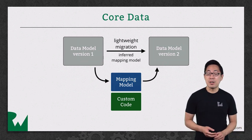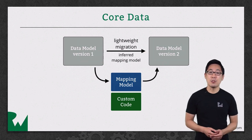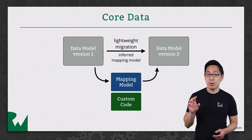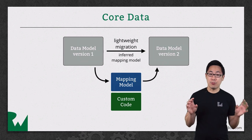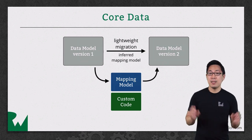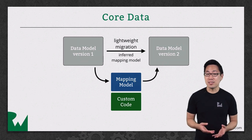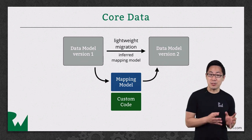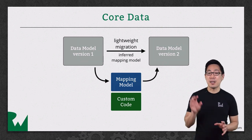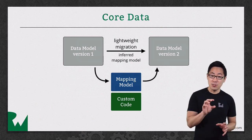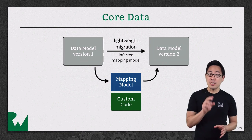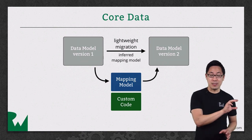There's also the problem of non-sequential migrations. For example, if the user skips a version and you need to migrate from version one to version three. In the book Core Data by Tutorials, there's a chapter on migrations that covers how to perform these sequential migrations — in this case, to migrate from one to two, and then immediately perform two to three.